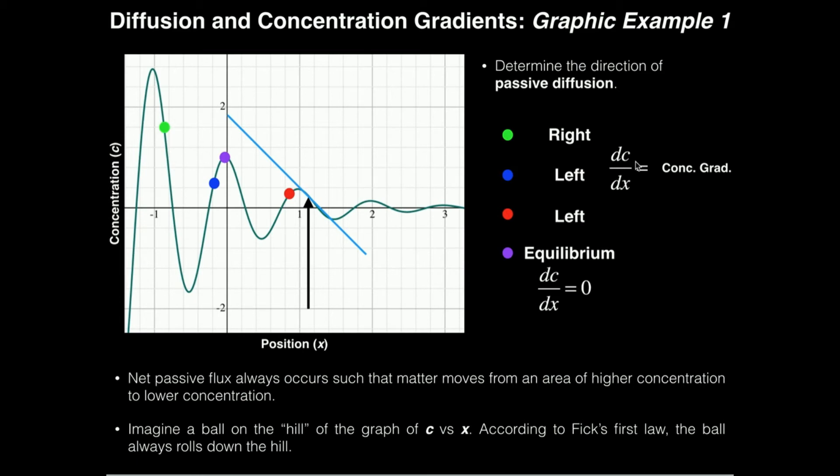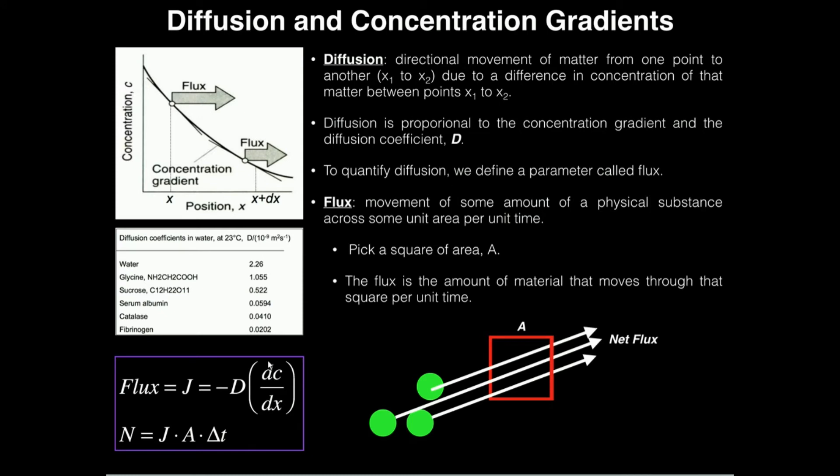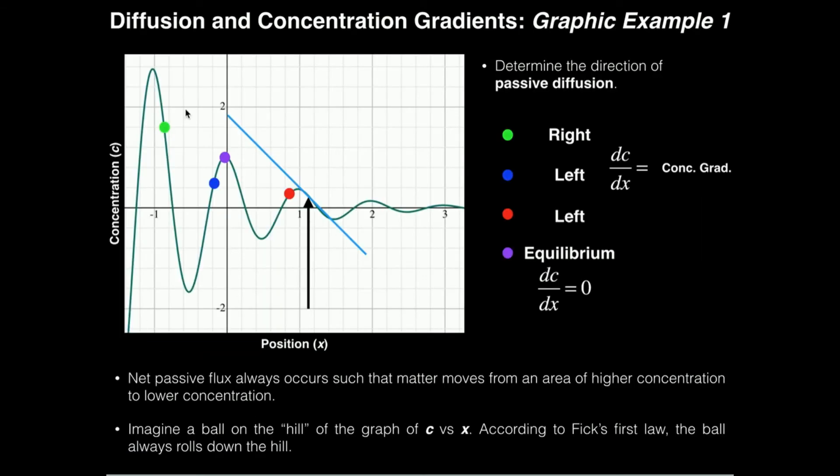Well, remember the concentration gradient dc/dx, the slope of the line, that's the concentration gradient. The slope is negative here at the green point. Going back to this expression, we have a negative concentration gradient times a positive number times another negative, so the flux will be positive. Positive is the rightwards direction, so we have a negative slope. Diffusion on this curve is to the right.